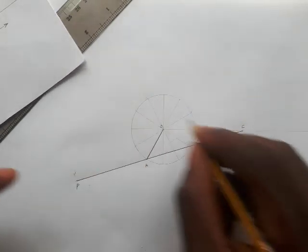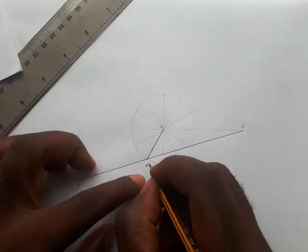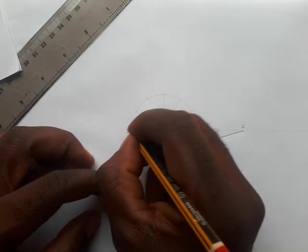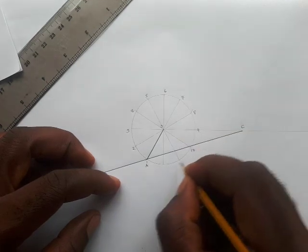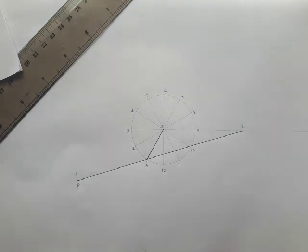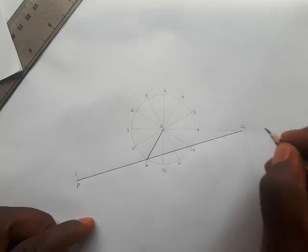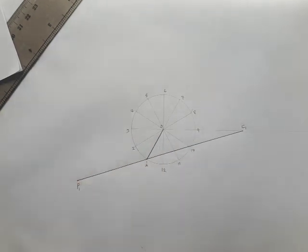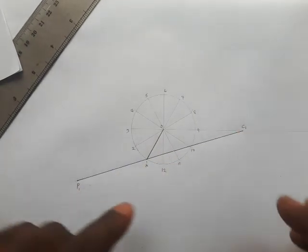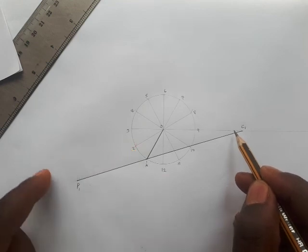Since this mechanism is moving clockwise, let's number the positions. This is one — going clockwise: two, three, four, five, six, seven, eight, nine, ten, eleven, and twelve. So let me call this C1 and P1. At position one I have C1 and P1. At position two, the crank moves and you have C2 somewhere and P2 somewhere around that area.